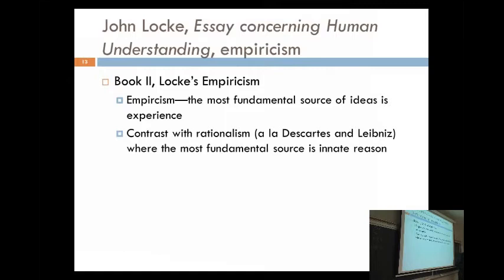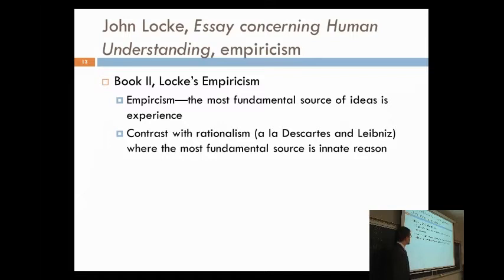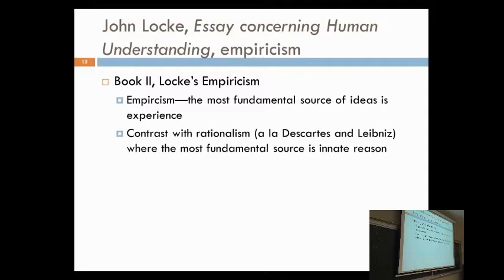This takes us from Book 1 to Book 2. Book 2 is now the positive account of his view of knowledge. Book 1 was the negative account — it's not the case that ideas come innately. So what he needs to do now in Book 2 is give us a positive account: where do the ideas come from? This is called empiricism — the view that the most fundamental source for the origin of all of our thoughts and ideas comes from experience. This is supposed to be a contrast with the rationalism of Descartes and Leibniz, who taught that the most fundamental source for our ideas comes through innate reason. Locke says: no, experience.